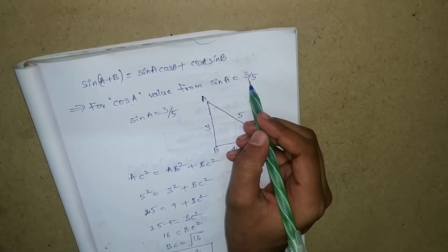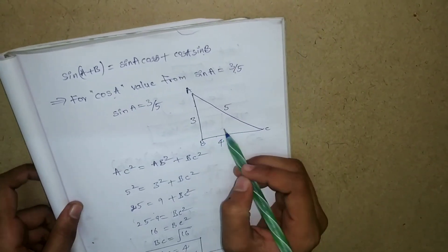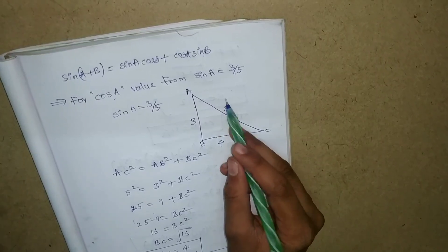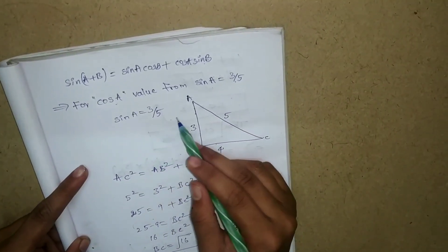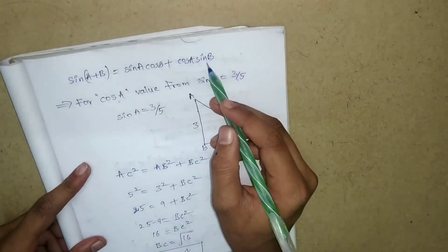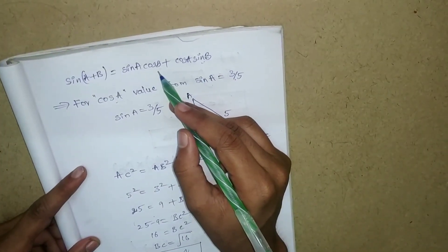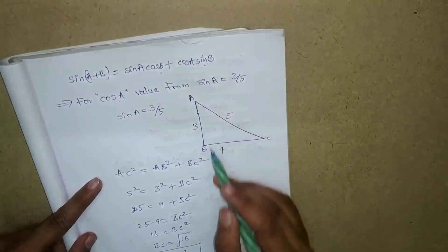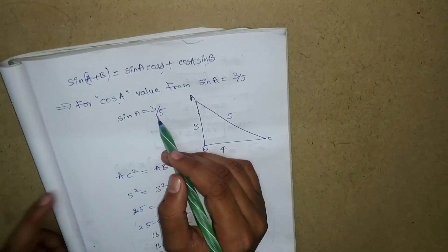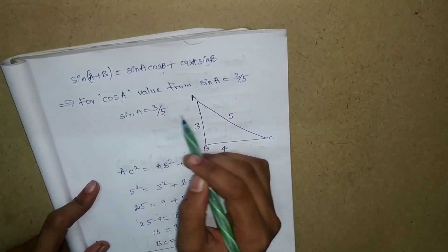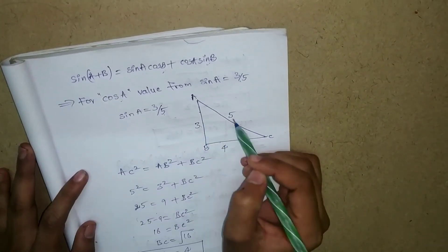By applying the Pythagoras theorem on a triangle, we need to find the cos a value. Since sin a equals 3 by 5, the opposite side is 3 and the hypotenuse is 5. Sin is opposite by hypotenuse. So sin a is found as 3 by 5. We need to find the adjacent side.